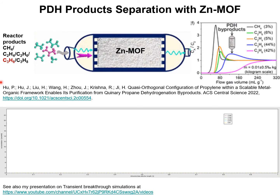Consider the separation of a five-component feed mixture exiting the propane dehydrogenation reactor. The separation is carried out in a fixed bed absorber packed with the zinc-based MOF with 1D channels. The feed mixture entering the fixed bed absorber contains 3% methane, 6% ethane, 5% ethylene, 44% propane, and 42% propylene.